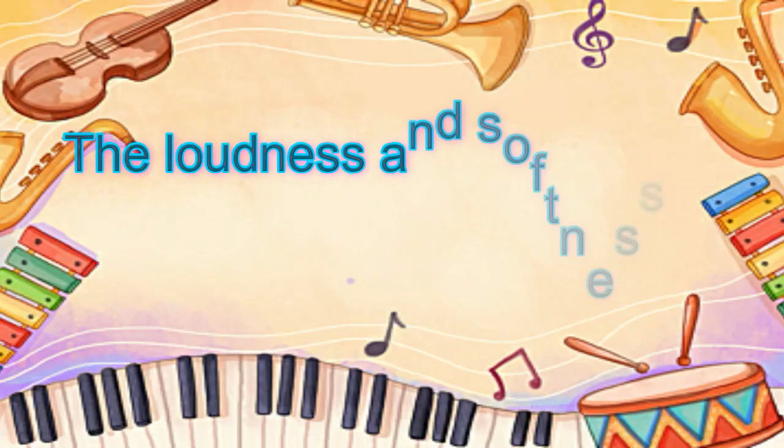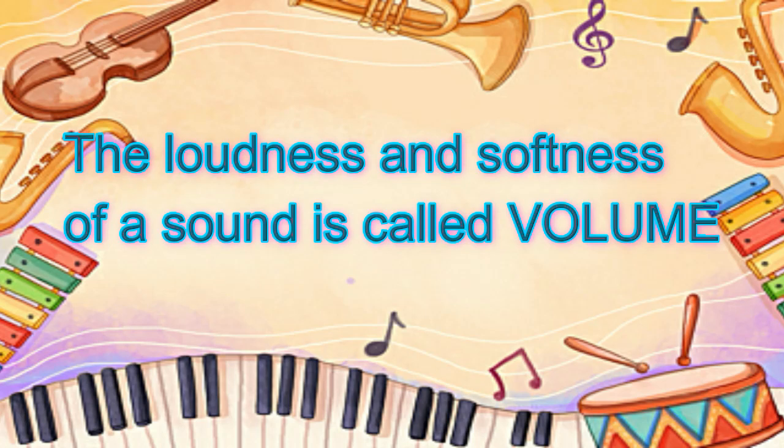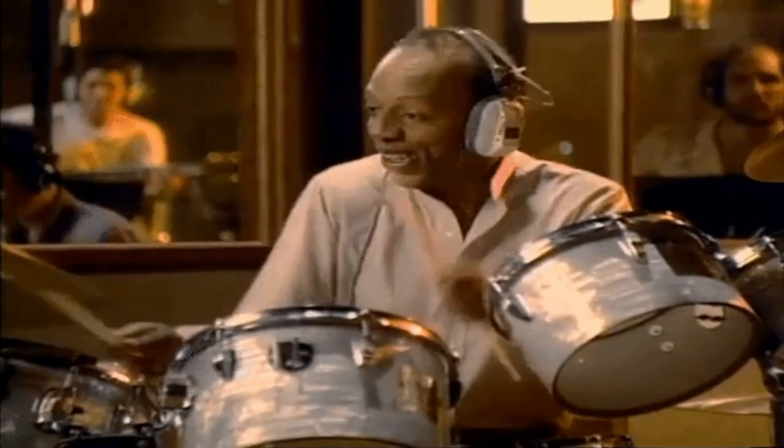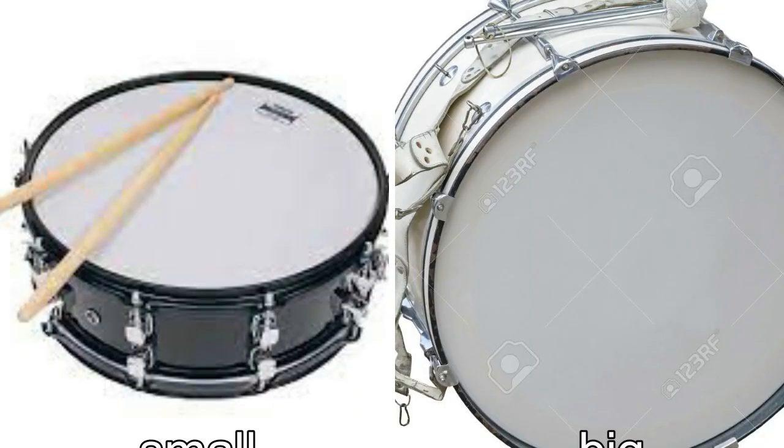The loudness or softness of a sound is called volume. The harder you tap the drum, the more it will vibrate. The more an object vibrates, the louder the sound will be. The greater the energy used in producing sound, the louder the sound produced.